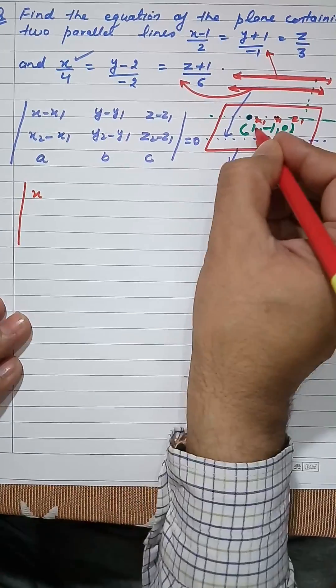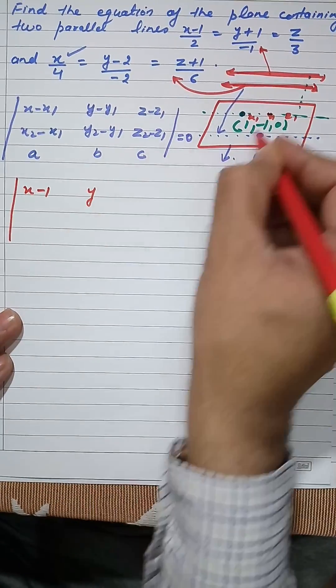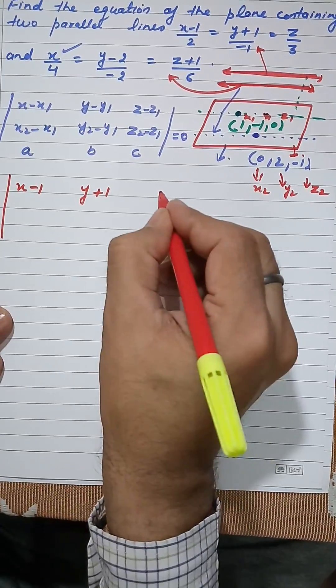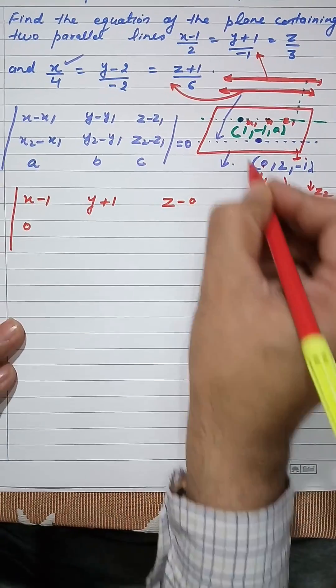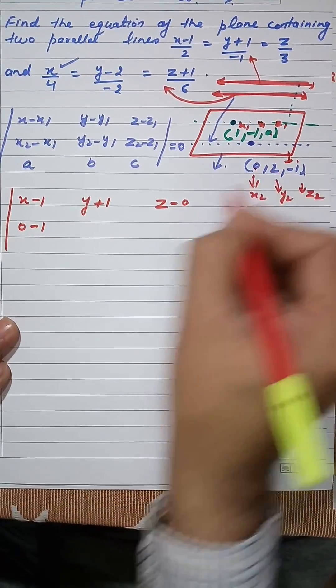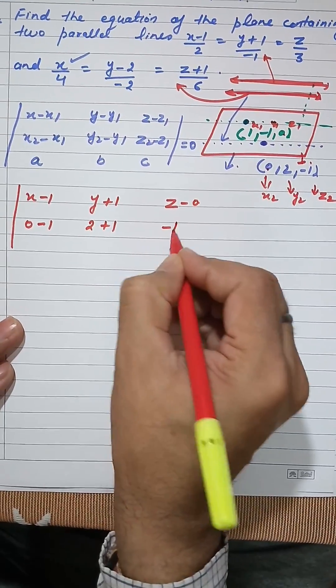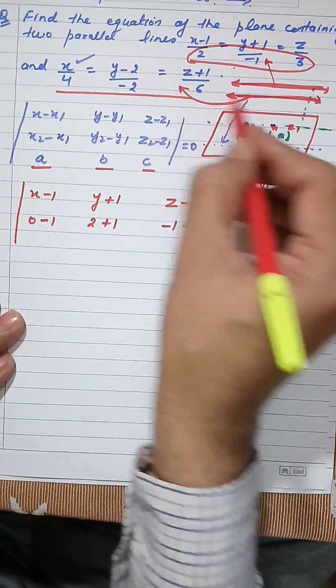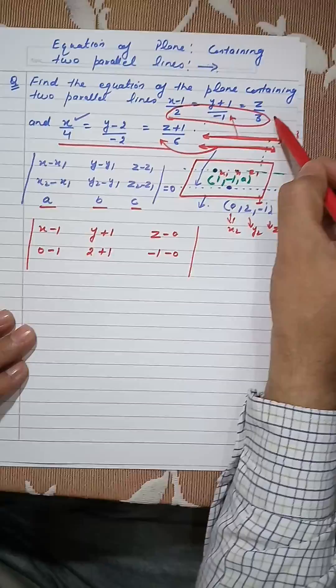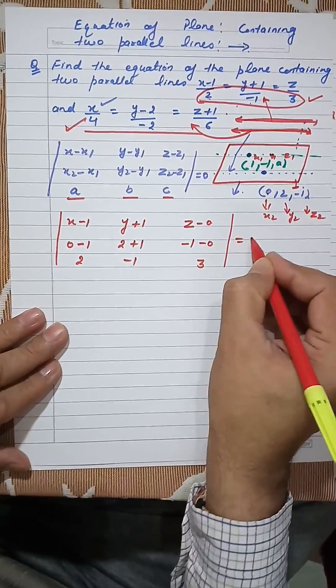Now putting the values: x minus (-1), y minus (-1), z minus 0 for the first point. Then x2 minus x1 gives 0 minus (-1) = 1, y2 minus y1 gives 2 plus 1 = 3, z2 minus z1 gives -1 minus 0 = -1. Since both lines are parallel, their direction ratios are proportional, so we can take direction ratios of either line: we take 2, -1, and 3. The determinant is set equal to 0.